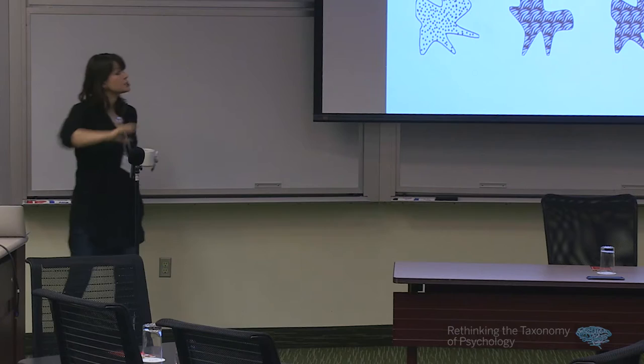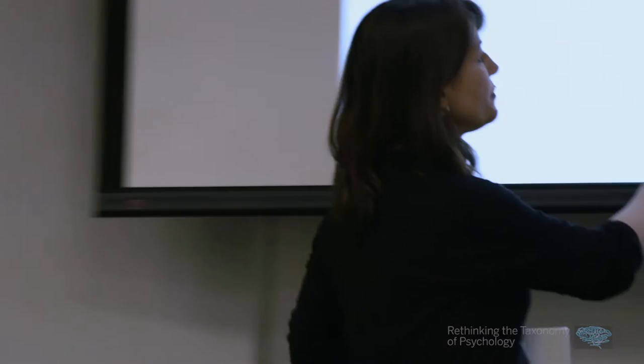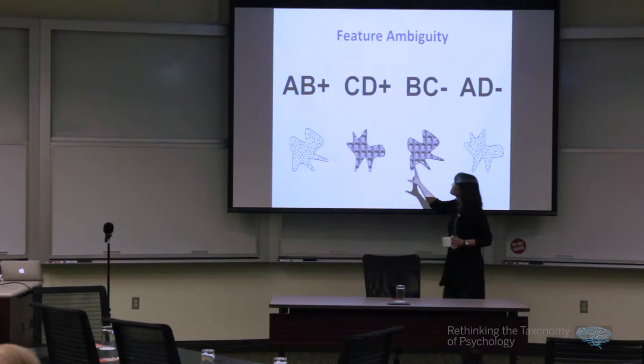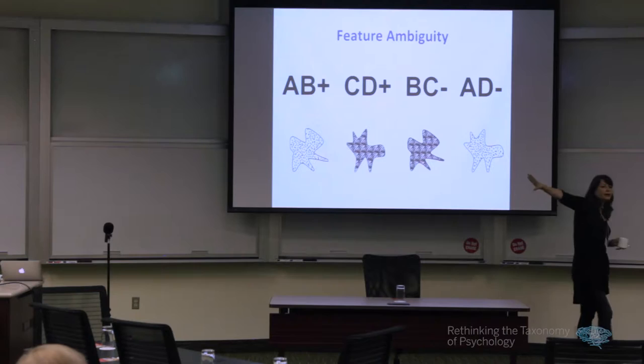What we reasoned was that we could force the use of these perirhinal complex object representations if we made the lower-level representations maintained in earlier regions of the ventral visual stream not very useful for solving the task — by making them ambiguous with respect to reward. Here's an example of one of the first tasks we used. This is taken from the animal learning literature — that's my background — it's called the biconditional discrimination. I'm also using animal models, so almost all the data I'm going to talk about is in animal models, although there's some human data too. What the animal has to do: imagine you have four different stimuli the animal is going to see.